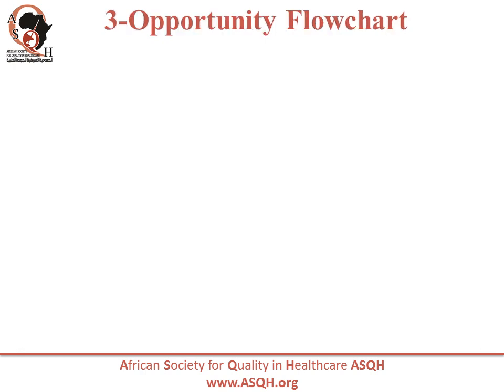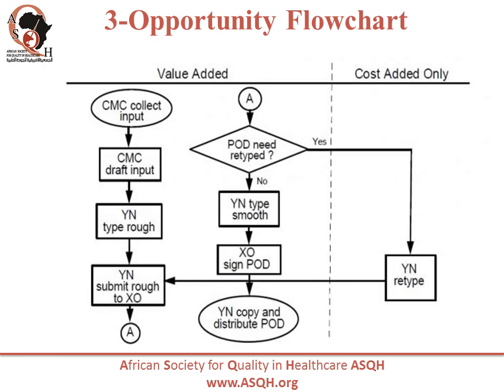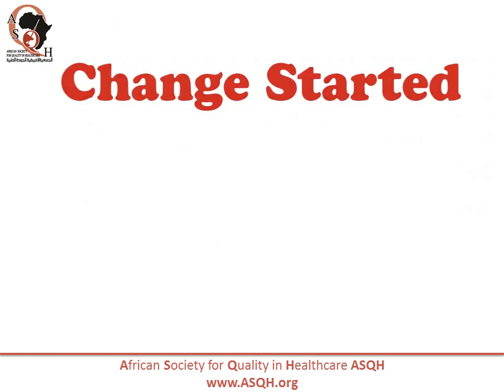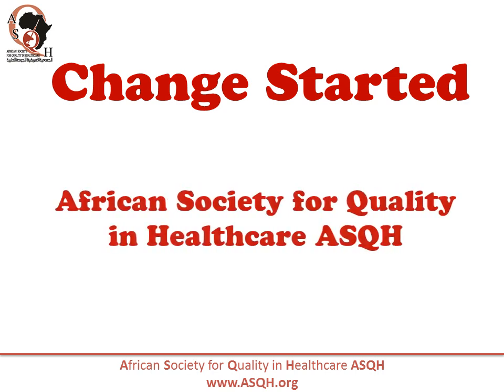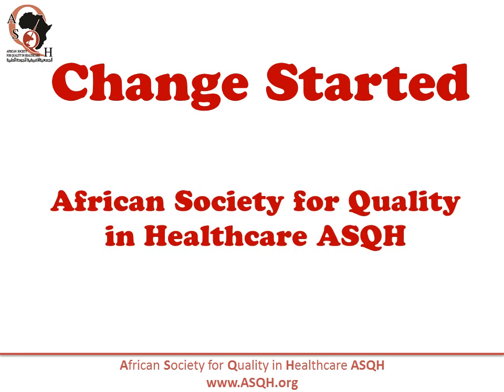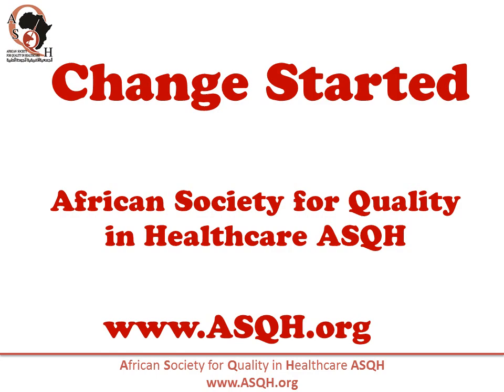Third type is the Opportunity Flowchart — a variation of the basic linear type that differentiates process activities that add value from those that add cost only. Change with us. African Society for Quality and Healthcare, ASQH. www.asqh.org